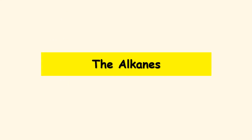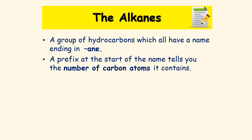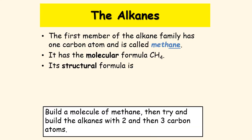Now we're going straight into the alkanes. The alkanes are a group of compounds which all have a name ending in -ane (A-N-E). So if you see a chemical whose name ends in -ane, you know it belongs to the alkanes. The name of each alkane starts with a prefix that tells you how many carbon atoms it contains. The first member of the alkane family has one carbon atom and so it is called methane. It has a molecular formula of CH₄, and its structural formula is one carbon with four hydrogens around it.